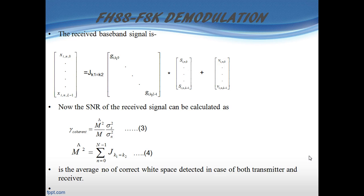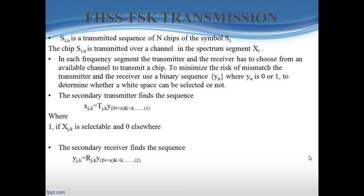The j-th channel in the k1 spectrum segment is selected by the secondary transmitter for transmission only if the transmission value is 1, otherwise it is aborted. Similarly, the j-th channel in the k2 spectrum segment is selected by the secondary receiver for reception only if the transmission value is 1, otherwise it is aborted. Thus the channel for transmission and reception is selected. If k1 equals k2, the transmission is considered identical and the transmitter and receiver use the same channel. If they are not equal, there is a transmission mismatch.